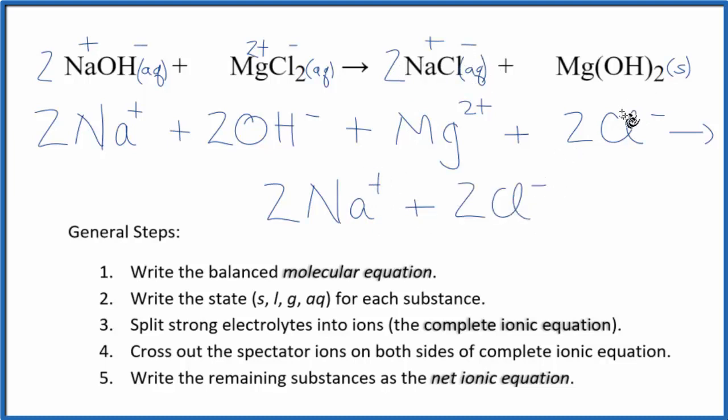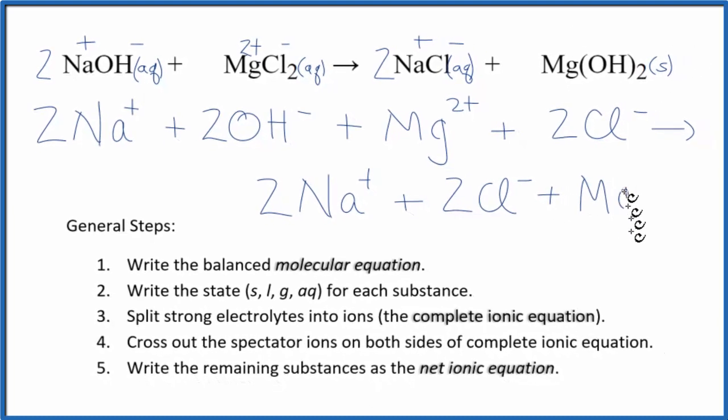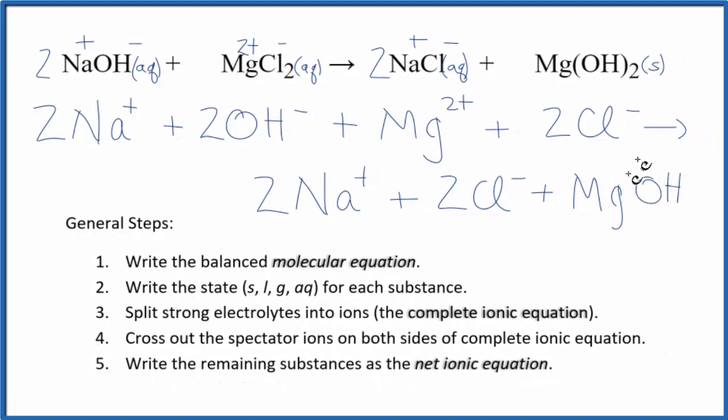For solids in net ionic equations, we don't split them apart. They're not split apart in the test tube, they're just at the bottom. So we're just going to leave that as MgOH2, that magnesium hydroxide.